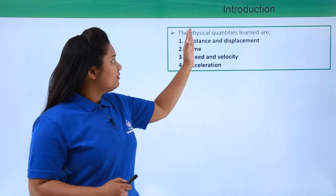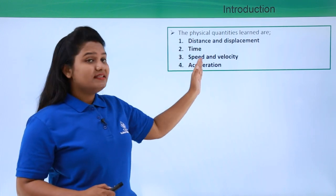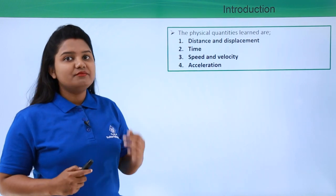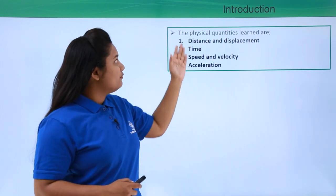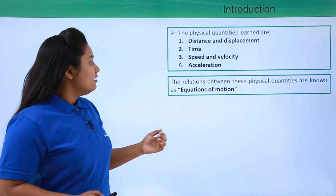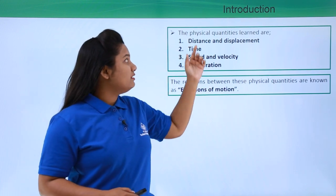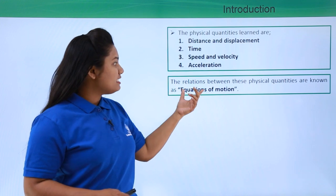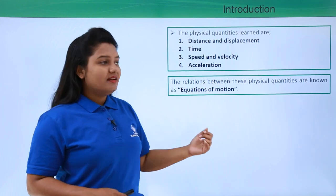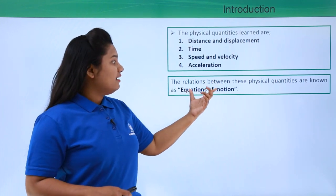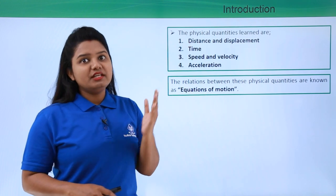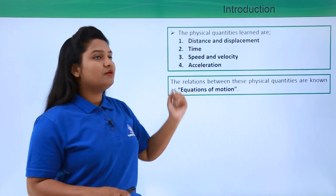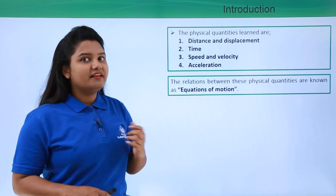Now all these physical quantities are related to each other — they are linked to each other in certain ways. These relations between these physical quantities are known as equations of motion. Equations of motion is a set of equations which relate all these physical quantities that we will be learning in this video.